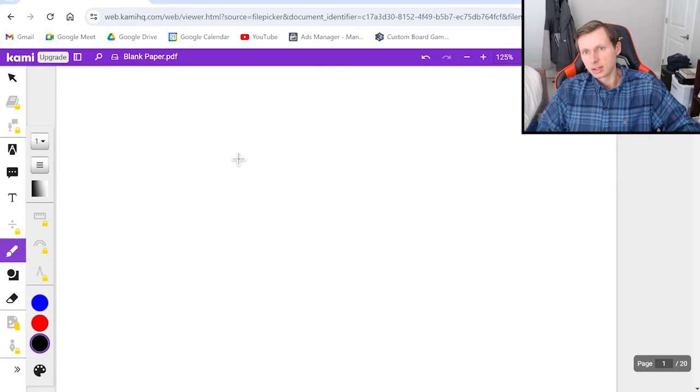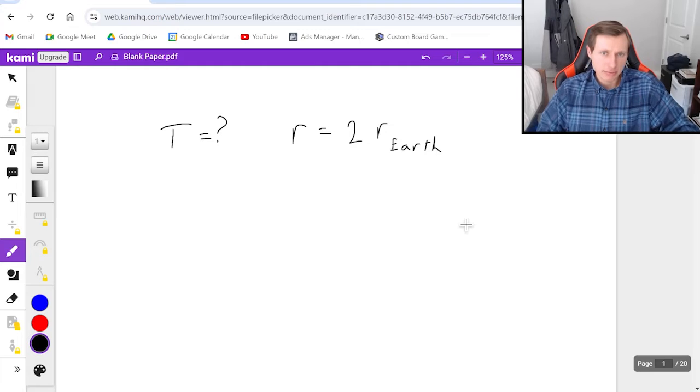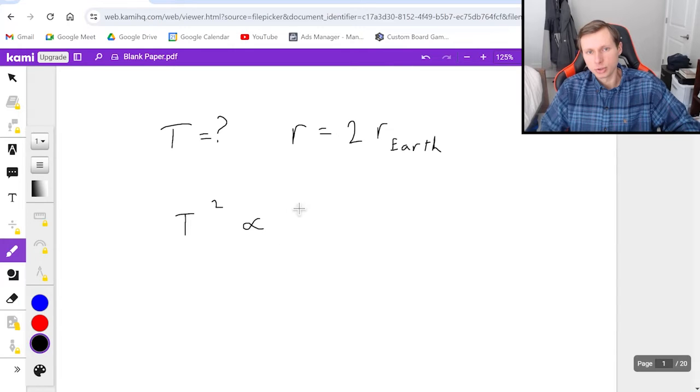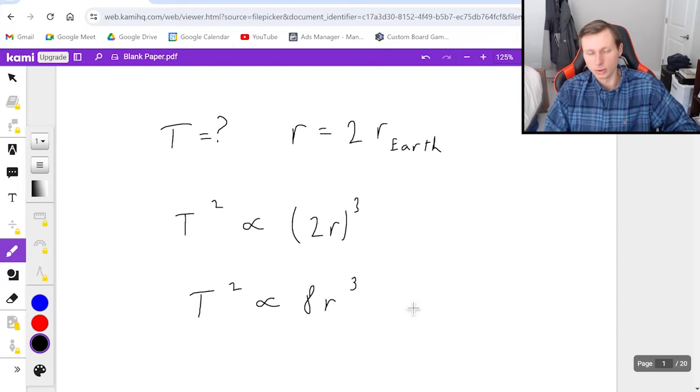So for instance, let's say I want to find the period for a planet whose radius is twice that of the radius of Earth. How would I find such a period? Well first, I would say T squared is proportional to 2r cubed. I have to cube both the 2 and the r. So in other words, T squared is proportional to 8r cubed.